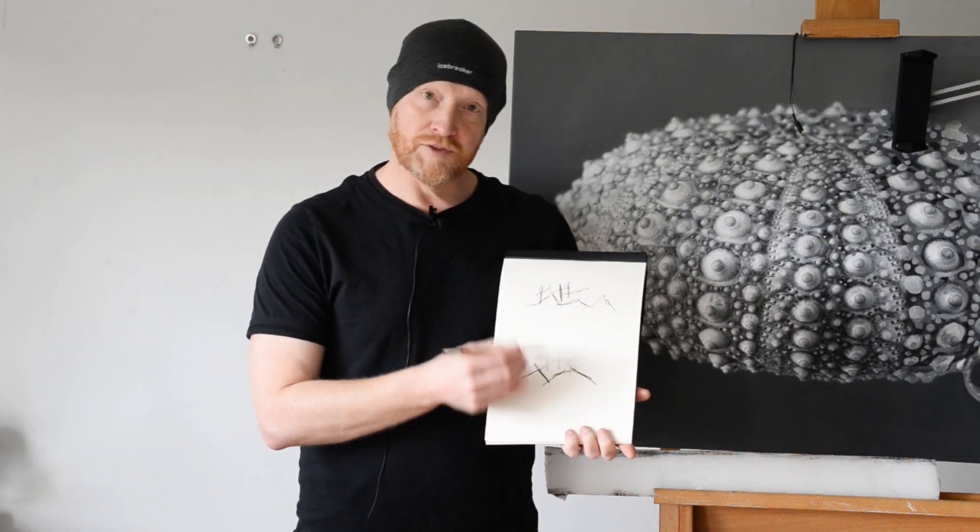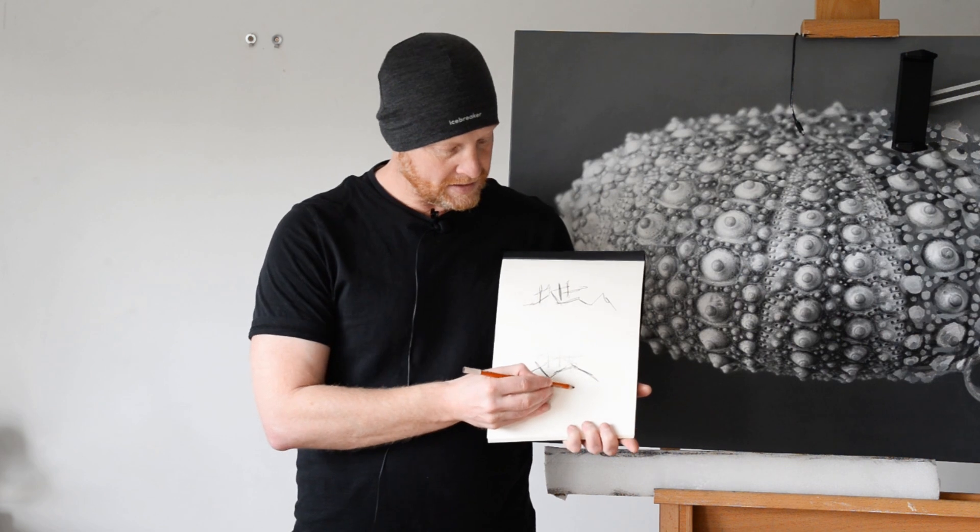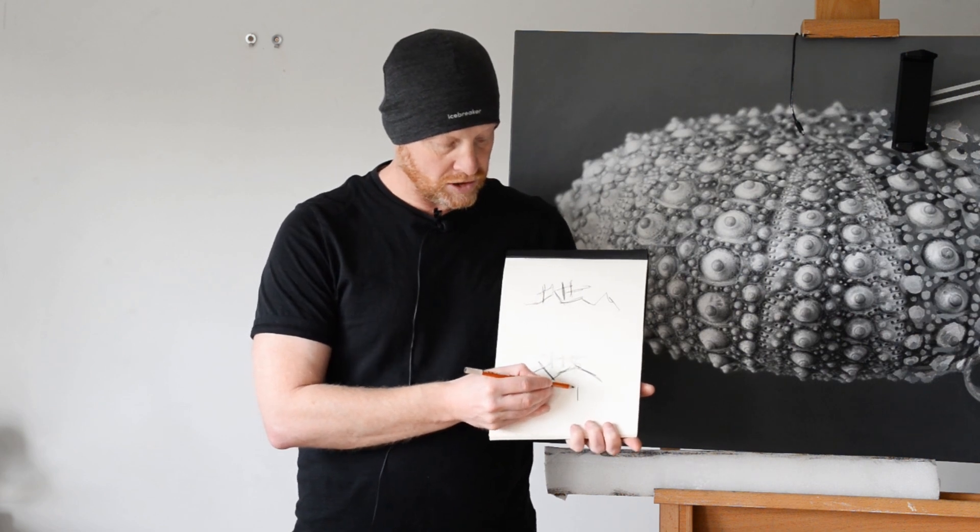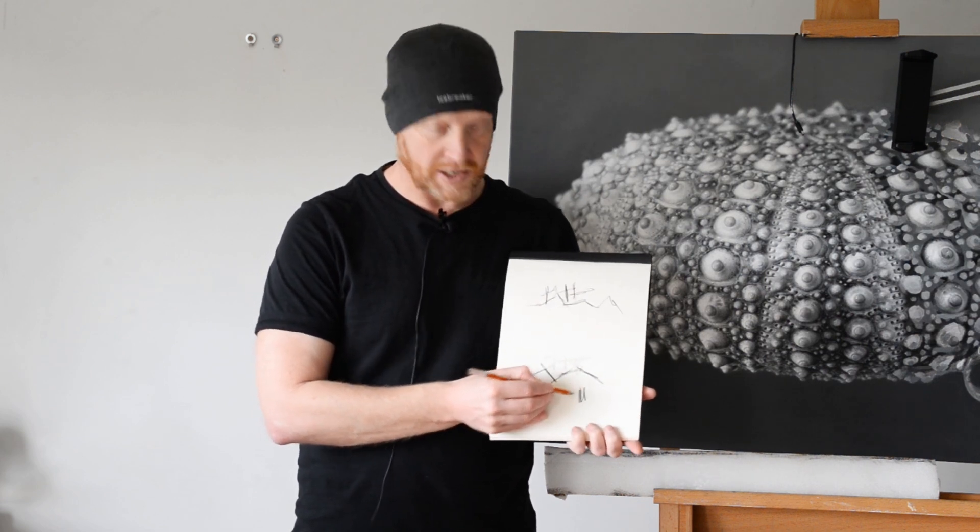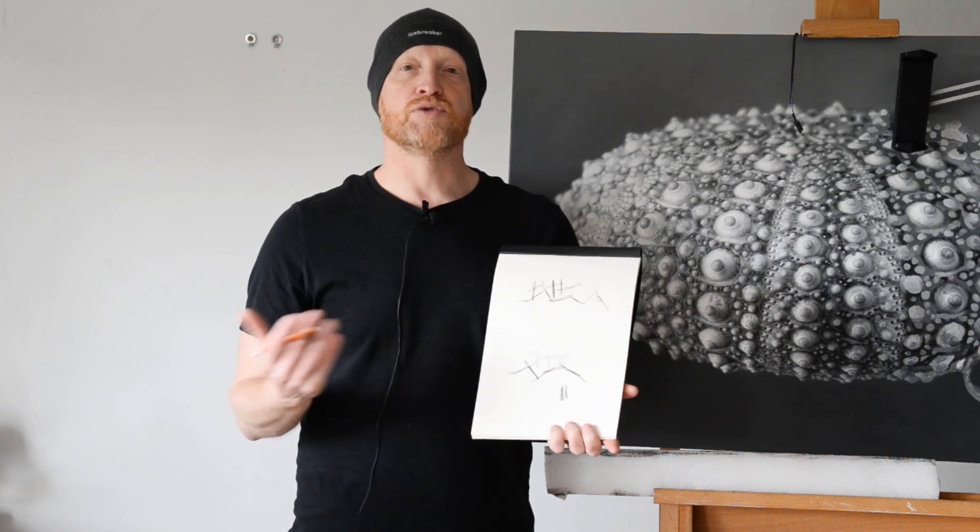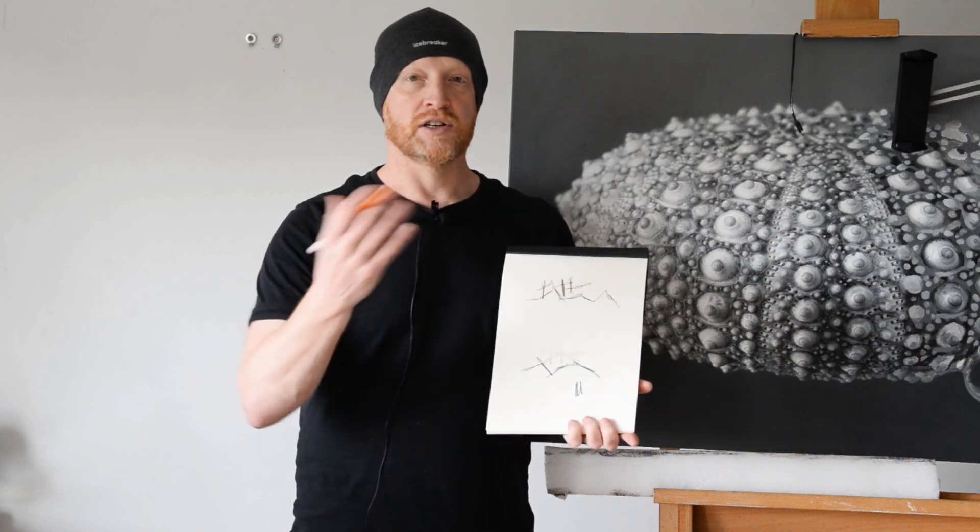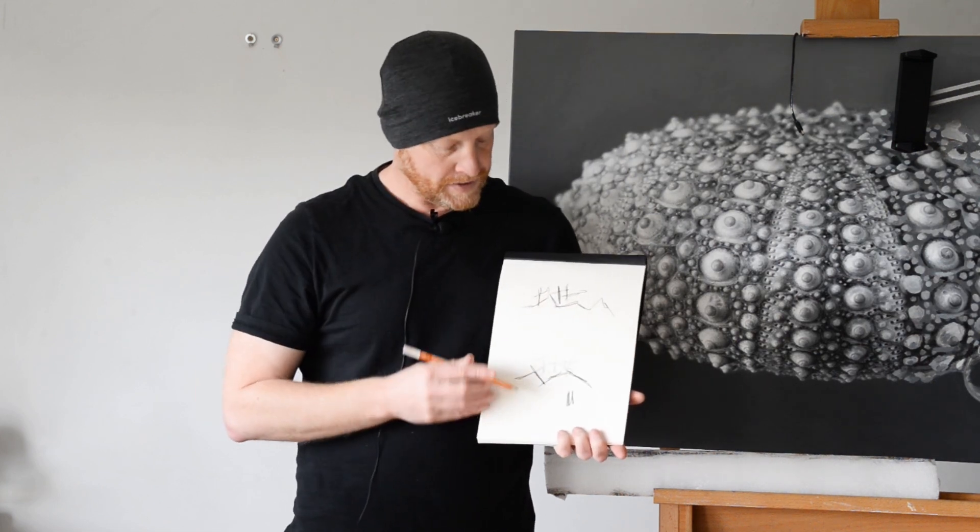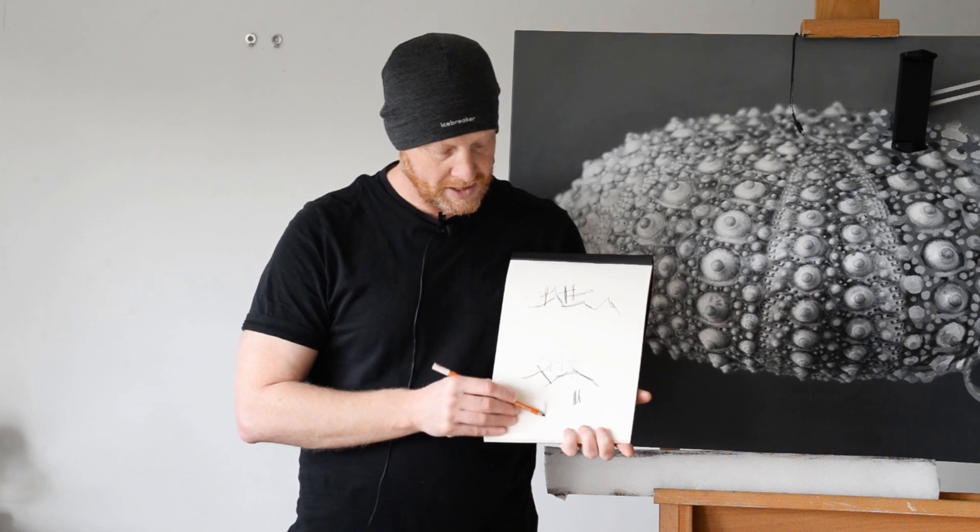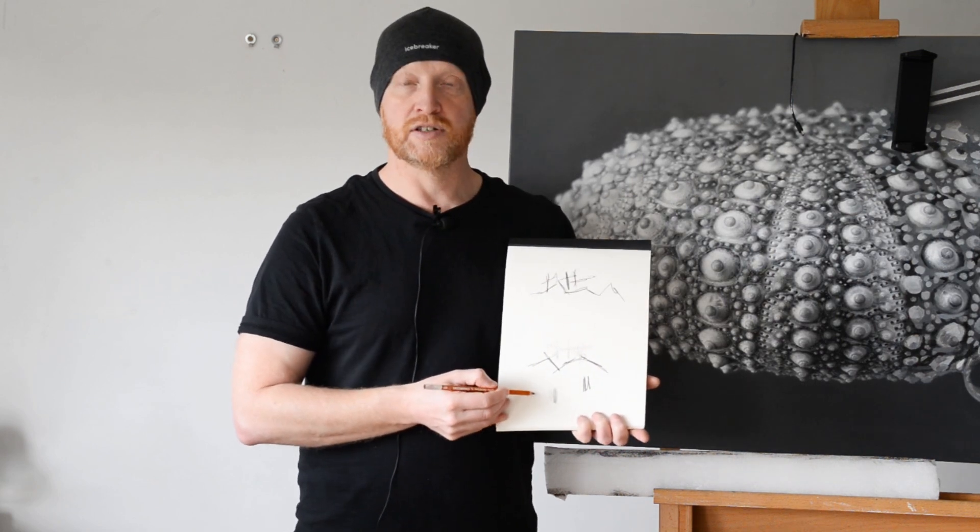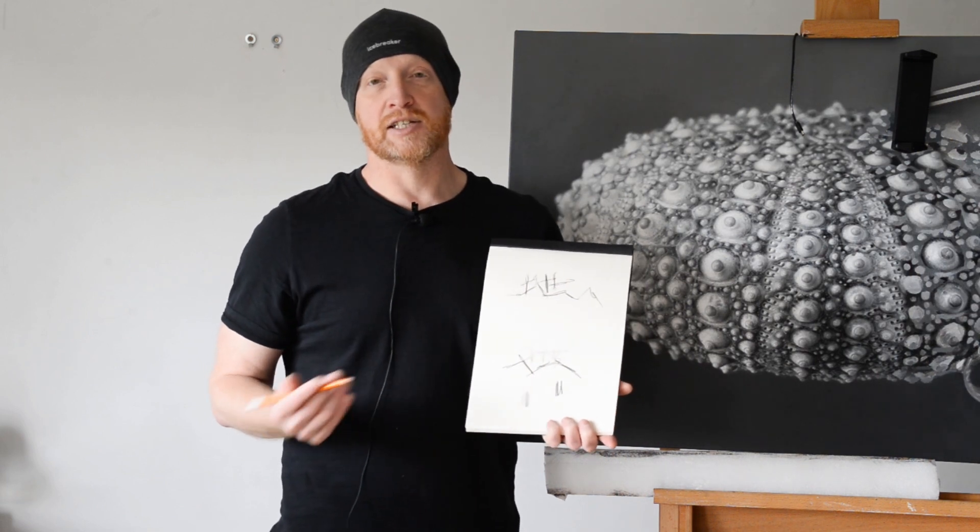So wherever you want the eye to lead, create a strong contrast between light and dark. And wherever you don't want the eye to lead, or you want the eye to fall on second or third, then you create less contrast between light and dark. And it really is that simple.